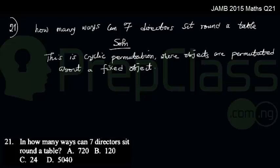Sitting round a table, we have 6 directors permutated around a single director. In instances like this, we use the formula (n-1) factorial. In this instance, n refers to the number of directors, which is given as 7.